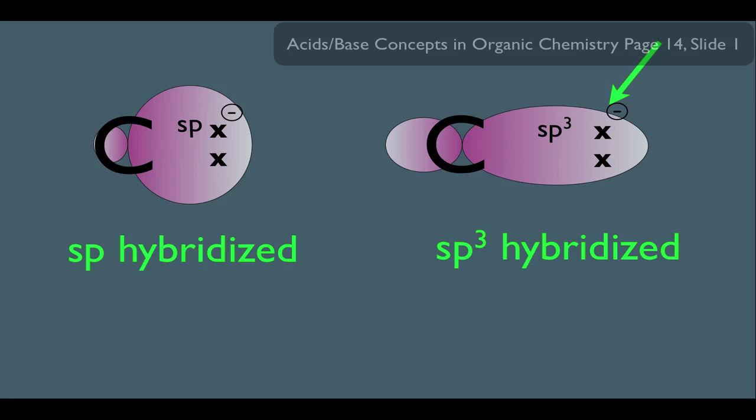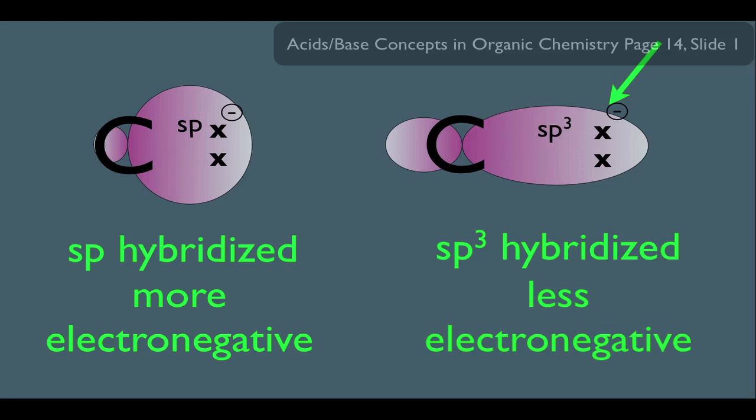Now, another way to think about electronegativity, it measures how much an atom could bring electrons to itself. The more you're able to do that, the more electronegative you are. So thinking about that, that basically means an sp hybridized carbon is more electronegative than an sp3 hybridized carbon, simply because the sp hybridized carbon does have a greater ability to bring the electrons closer to the carbon atom.